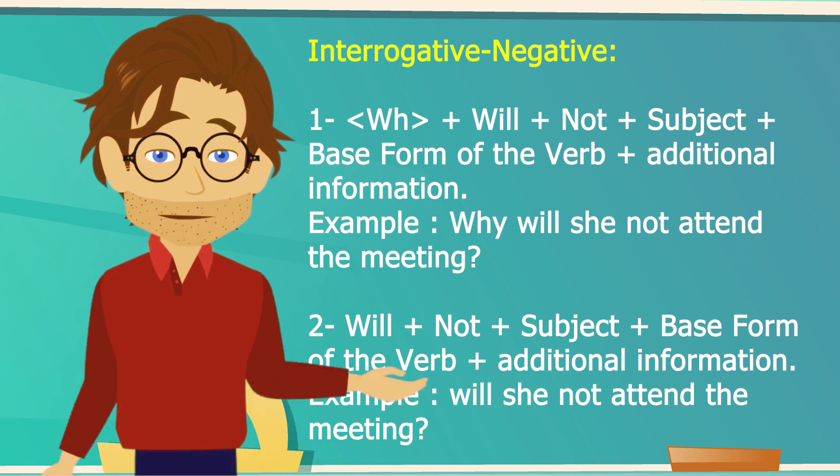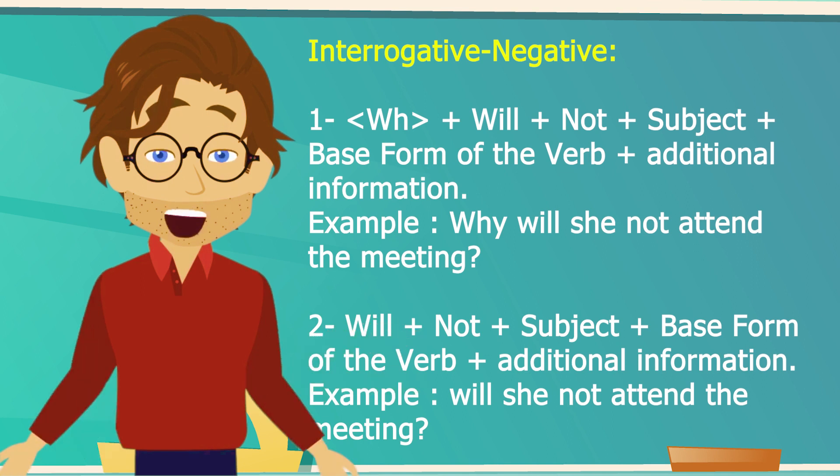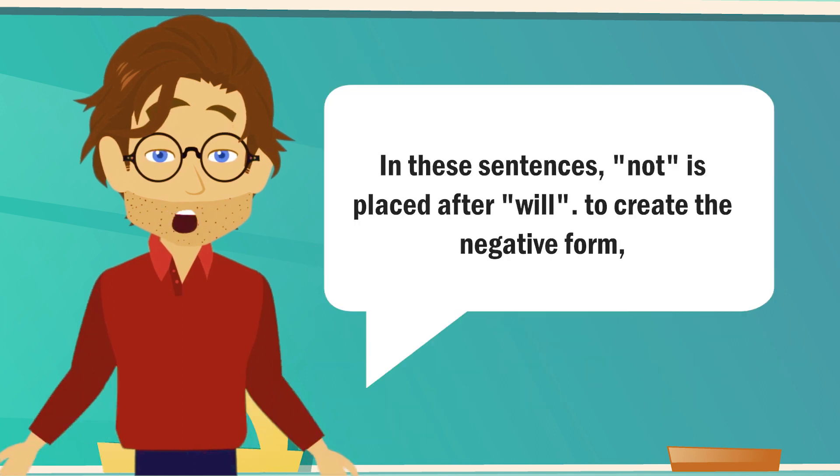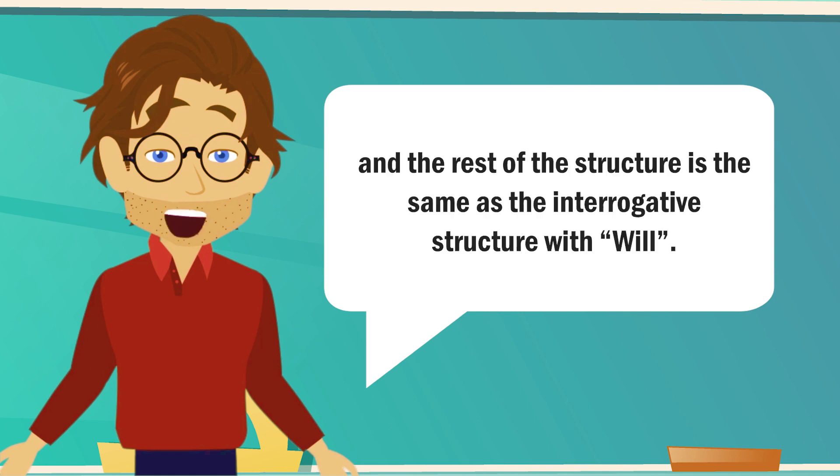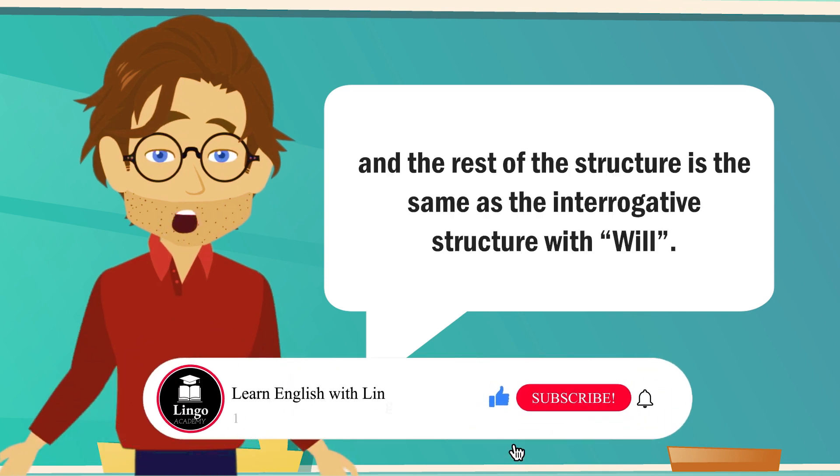Now, the second structure with will: Will plus not plus subject plus base form of the verb plus additional information. In these sentences, not is placed after will to create the negative form and the rest of the structure is the same as the interrogative structure with will.